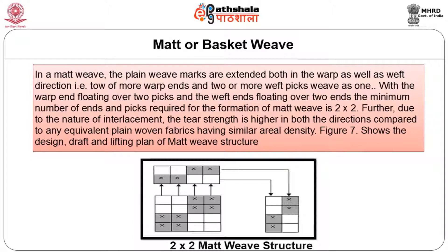In a mat or basket weave, the plain weave marks are extended both in the warp as well as in the weft direction — that is, two or more warp ends and two or more weft picks. With the warp end floating over two picks and weft end floating over two ends, the minimum number of ends and picks required for the formation of a mat weave is two by two. Due to the nature of interlacement, the tear strength is higher in both directions compared to any equivalent plain woven fabric having similar aerial density.